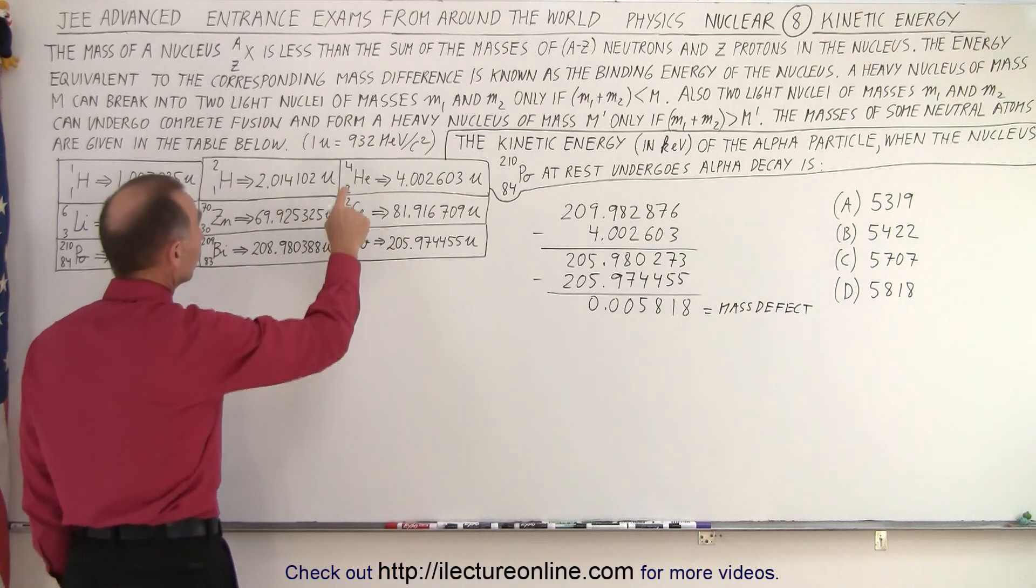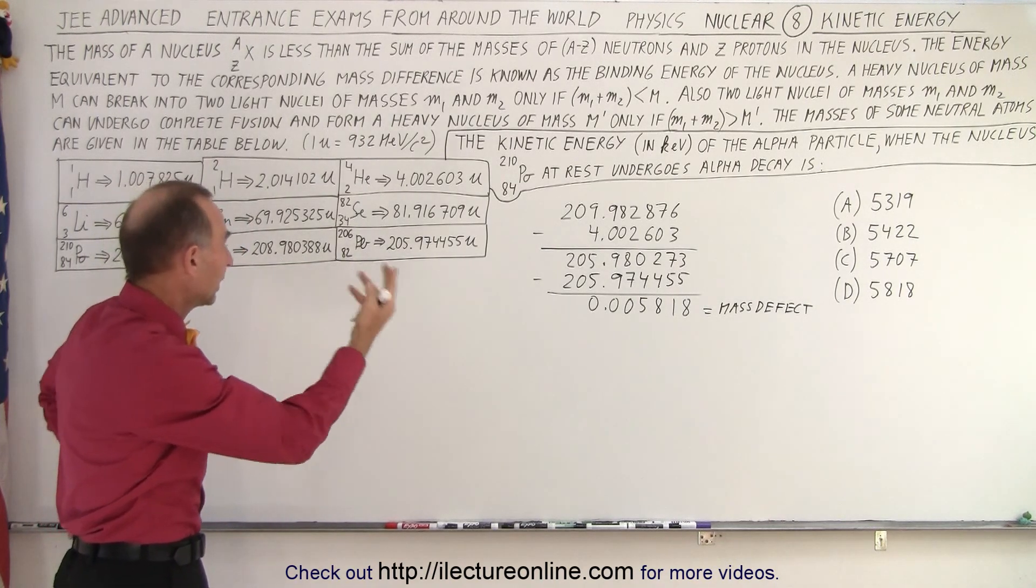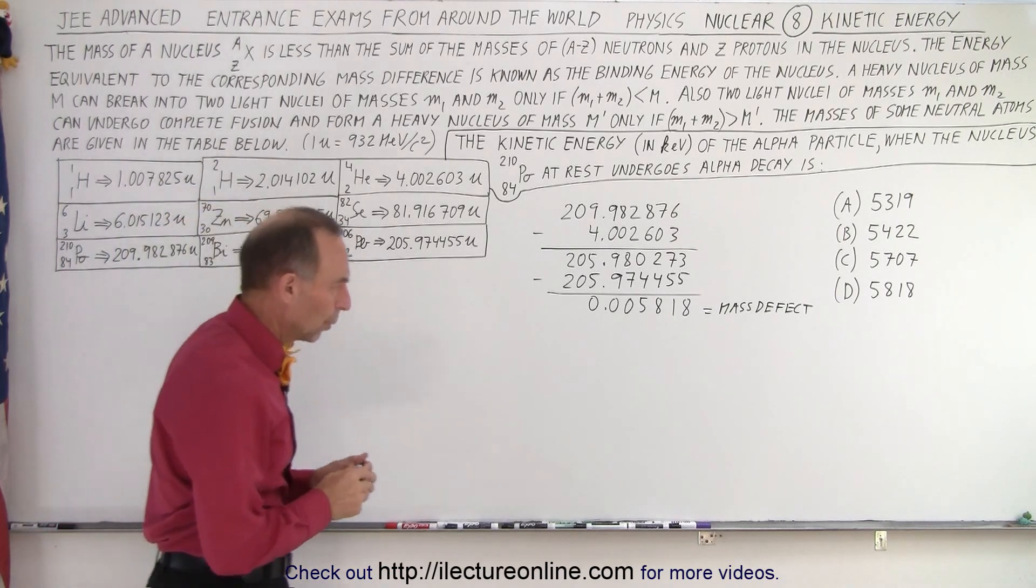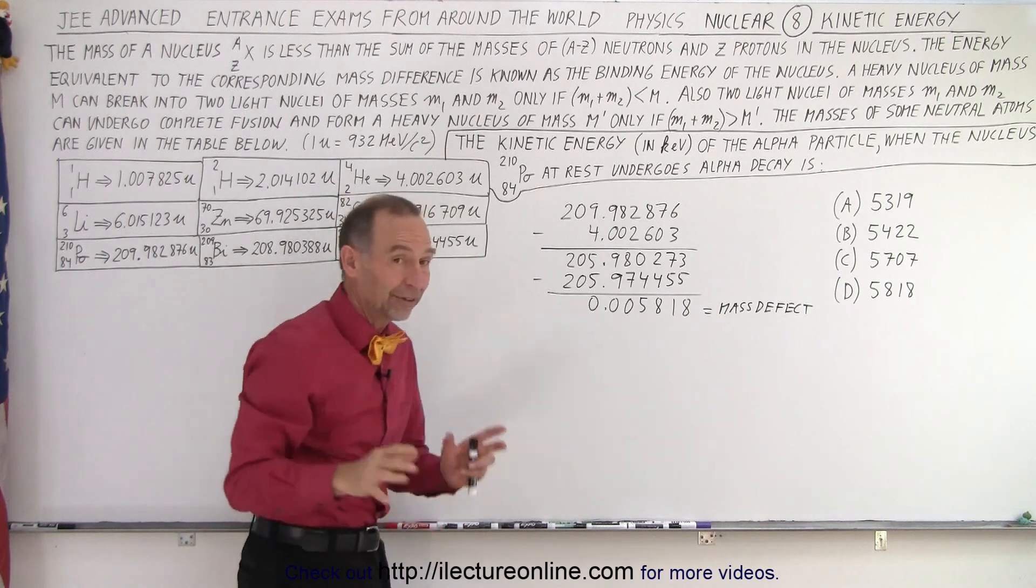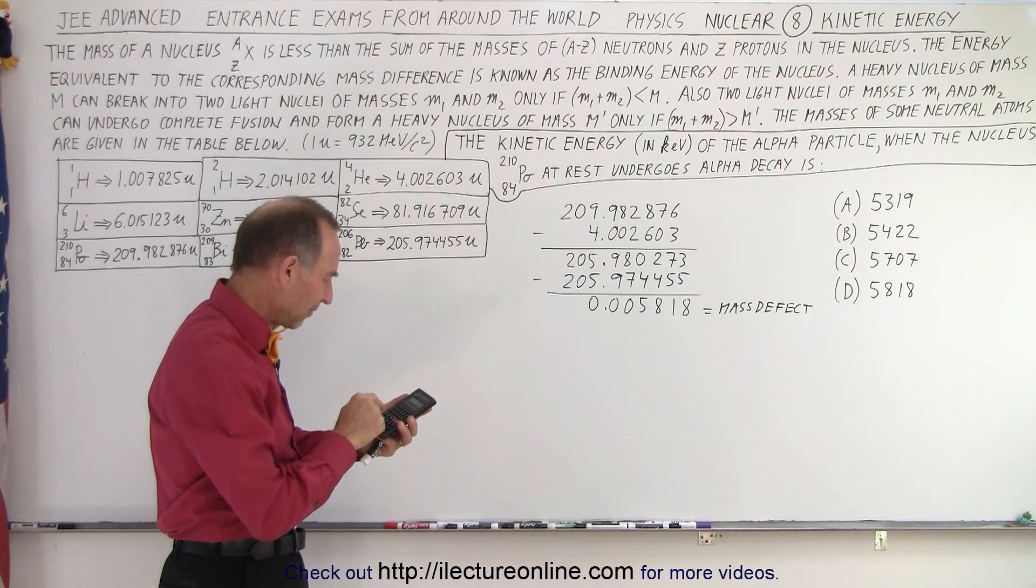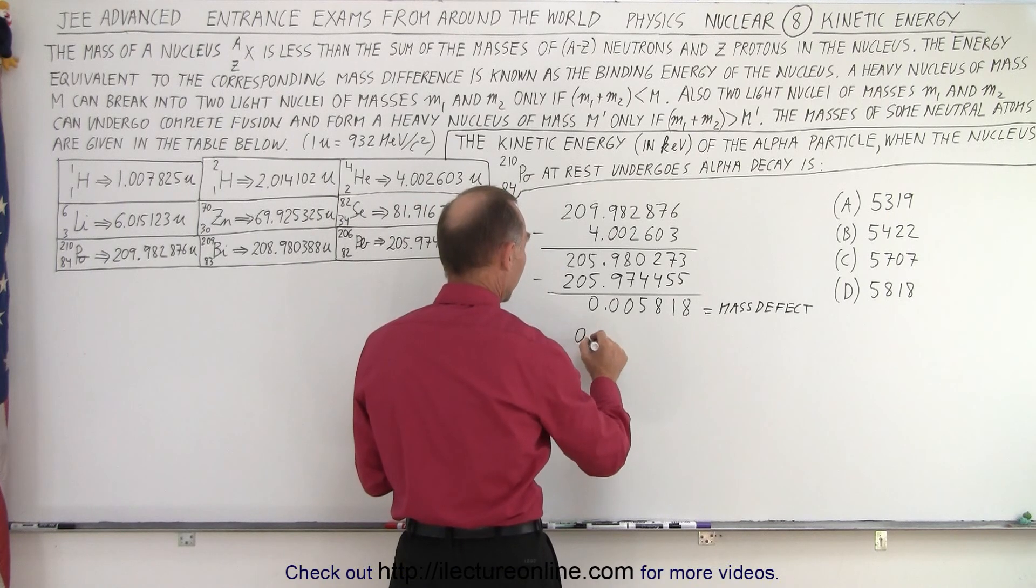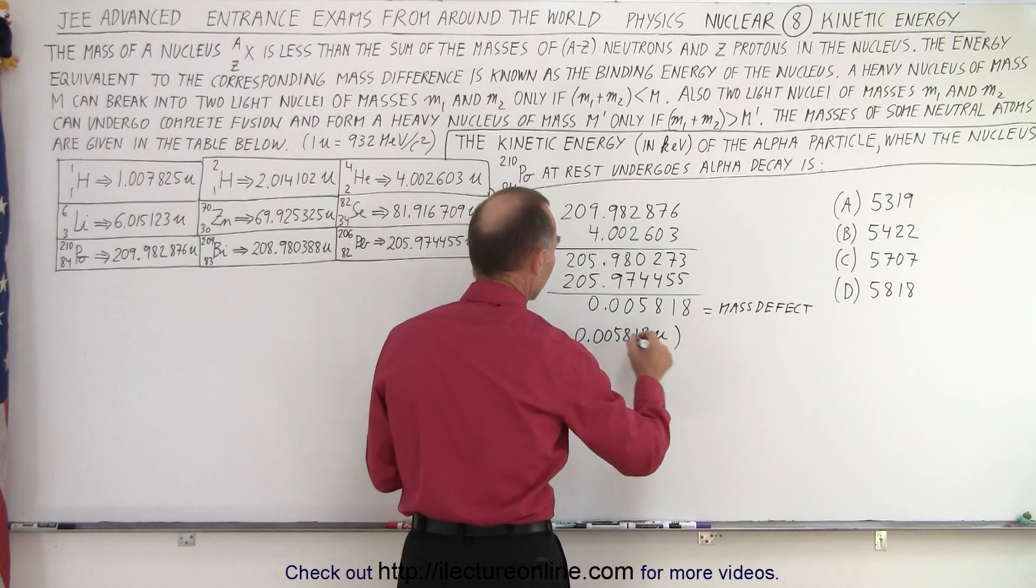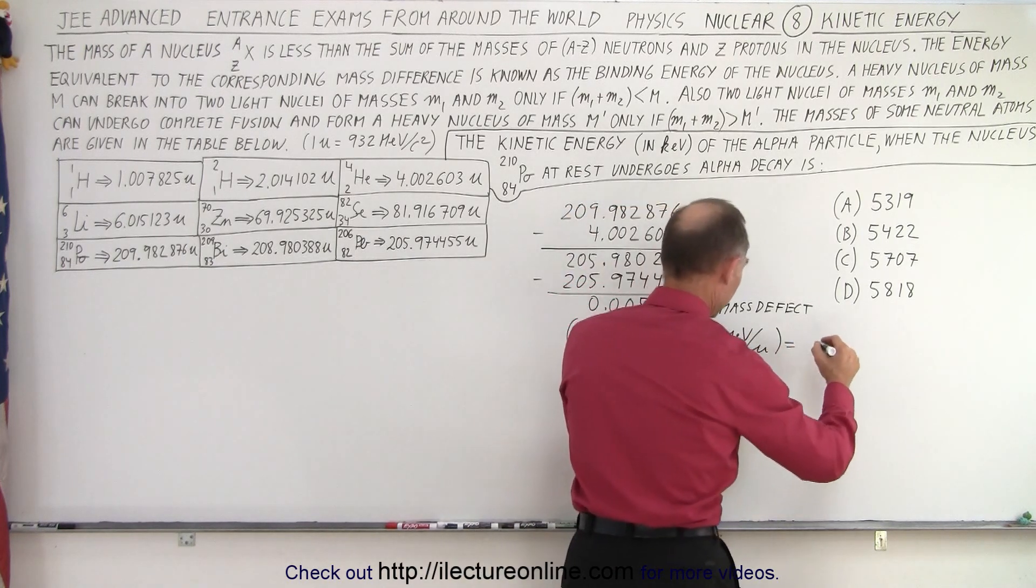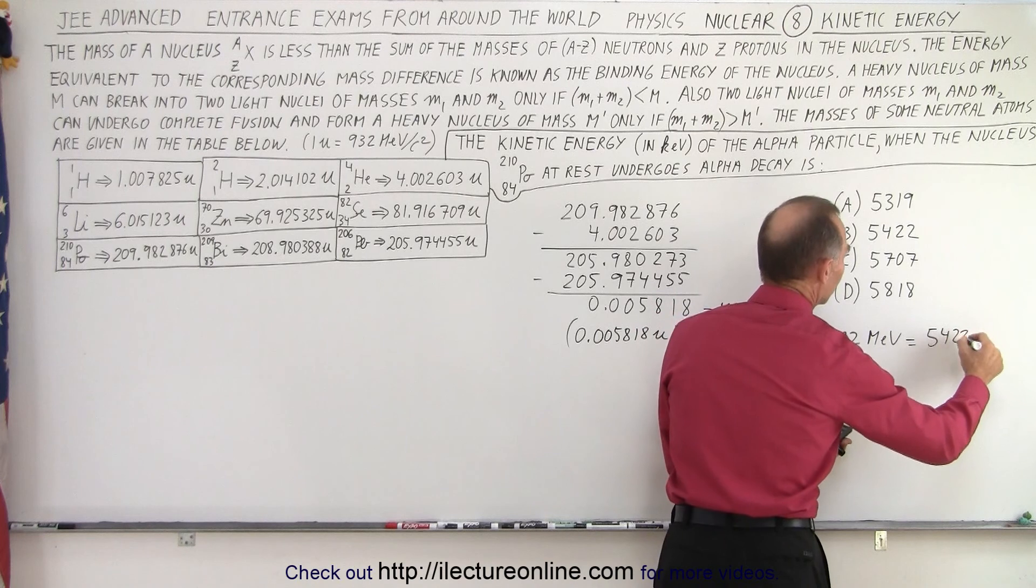The mass defect then gets converted to energy. For every atomic mass unit, we get 932 MeVs, million electron volts, divided by C squared. Or the energy we get is simply 932 million electron volts. The C squared just converts the mass to energy. So what we need to do now is multiply this times 932. On this test, you just have to kind of work it out on paper. But to save some time here, we're going to use a calculator. So 0.005818 multiplied times 932.